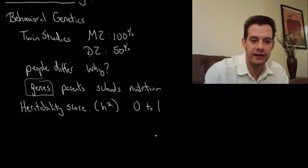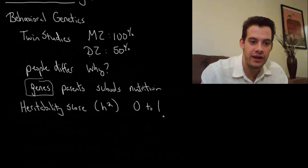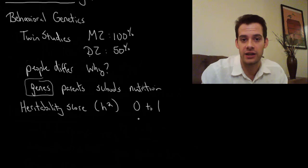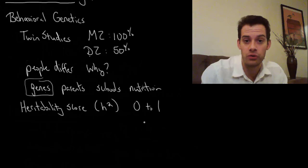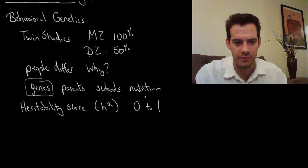One, on the other hand, for heritability score would mean genes are the only thing that matters. In other words, if we look at their genes we could explain all of the difference in IQ scores, regardless of schools or nutrition or parents or anything like that. Now as you might guess, these extremes are very unlikely to occur for most traits. Most of the traits we're interested in are going to involve an interaction of genes and environment.